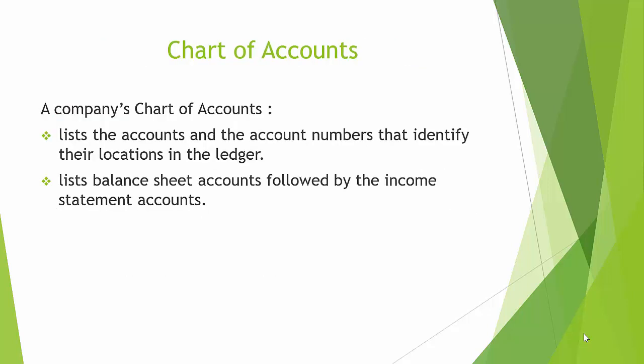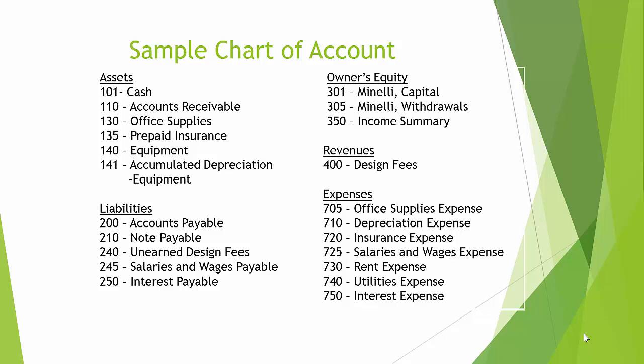A company's chart of accounts lists the accounts and the account numbers that identify their locations in the ledger. It lists balance sheet accounts followed by income statement accounts. Here is a sample chart of accounts. Notice that assets are numbered in the 100 block, liabilities in the 200 block, owner's equity in the 300 block, revenues 400, expenses 700 block. This numbering system is utilized to facilitate easy identification.